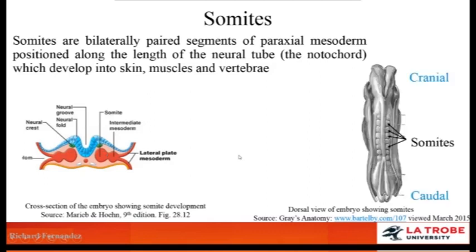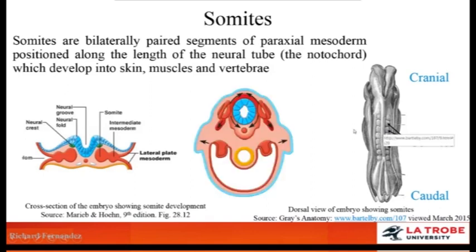Looking at a posterior or dorsal view of a developing embryo, we can see the neural tube and just adjacent to it, these somites. In a cross-section at a later stage, we can see the epidermis has already formed and some limb buds are starting to develop. The somite will develop into three functional aspects: the dermatome, which leads to the development of skin; the myotome, which leads to muscle; and the sclerotome, which leads to the vertebrae.